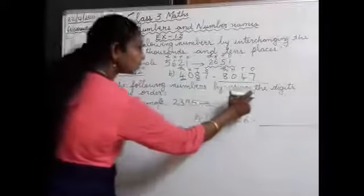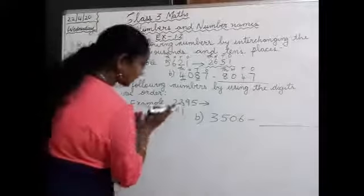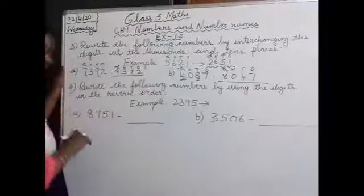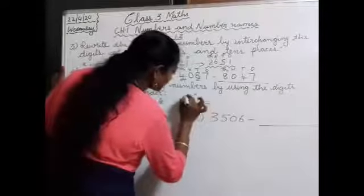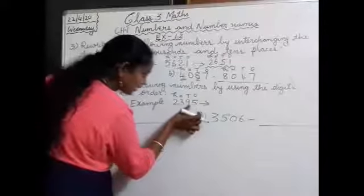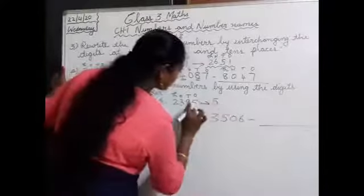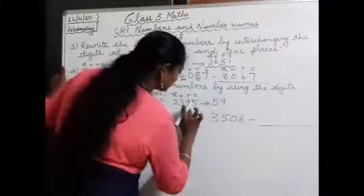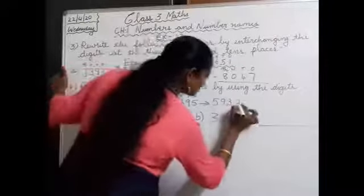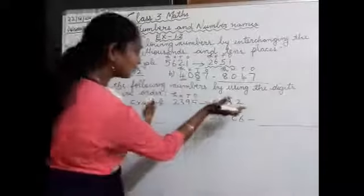Question 4: rewrite the following numbers by using the digits in reverse order. Reverse order means front to back. For example, 2395 should be written in reverse order. Writing ones, tens, hundreds, thousands — starting from 2395 — we write: 5 first, then 9, then 3, then 2. So 5932. After reversing, we got this answer.